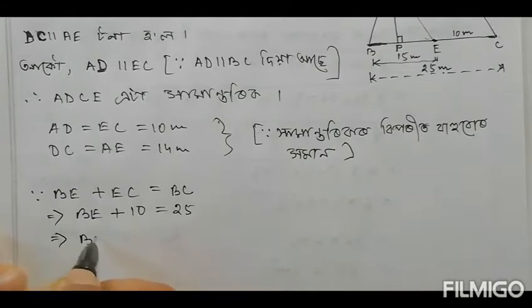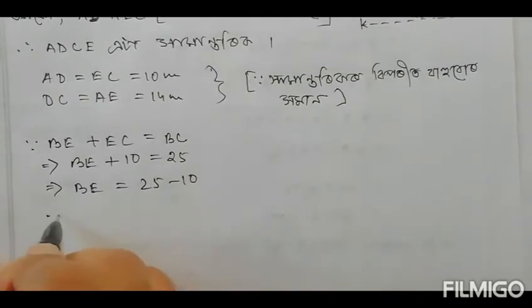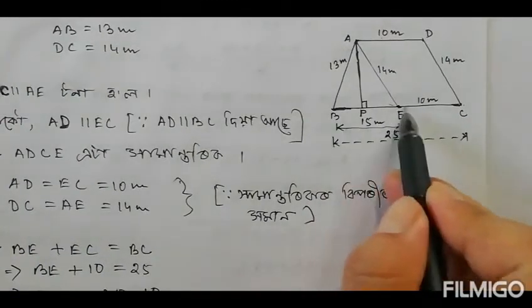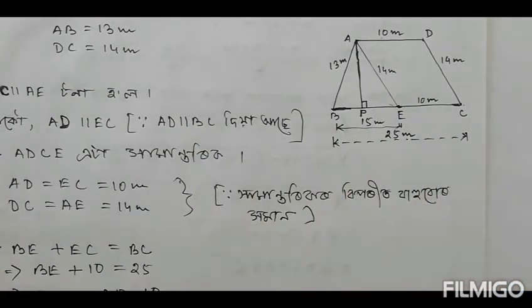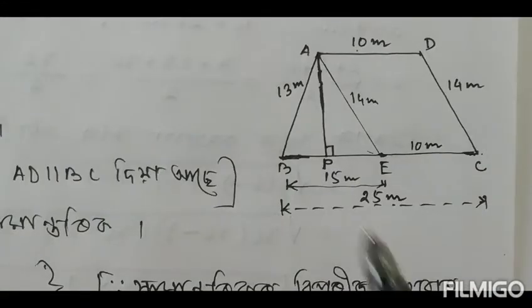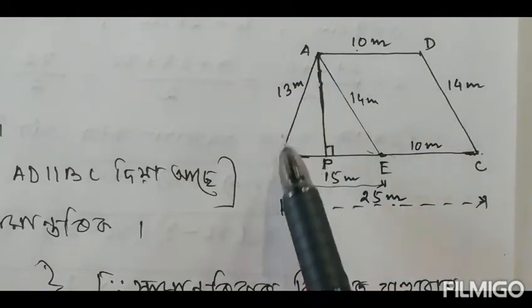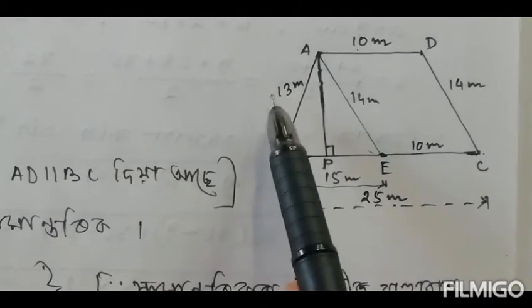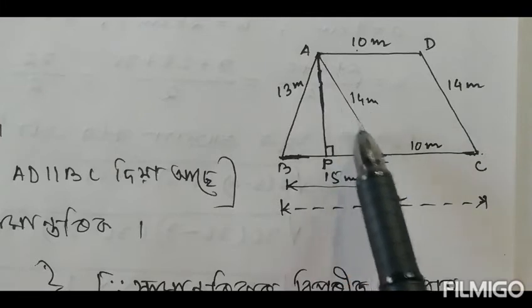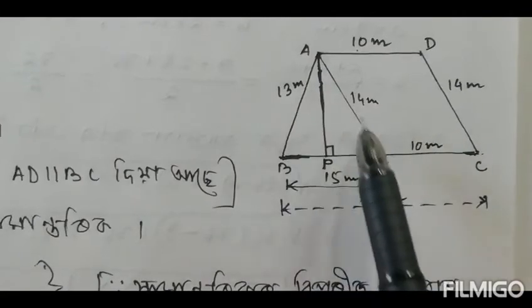So BC is 25m and BE is 15m. Therefore, for triangle ABE, A is 13m, B is 15m, and C is 14m. Triangle ABE has these three sides.